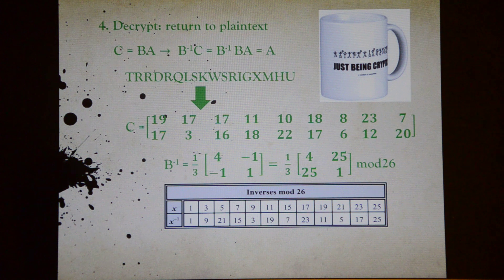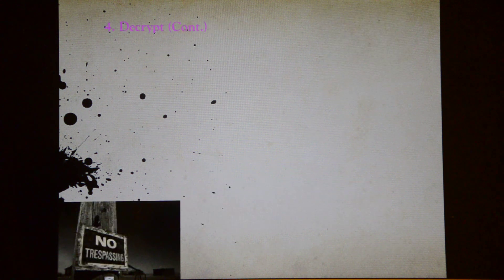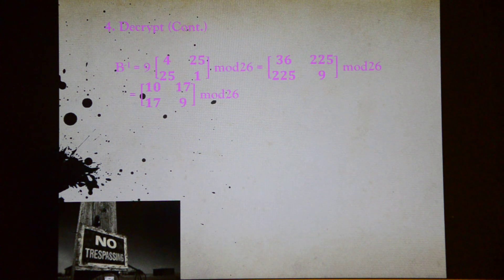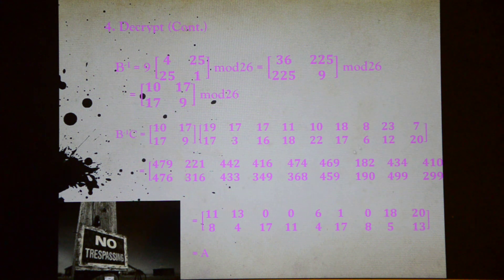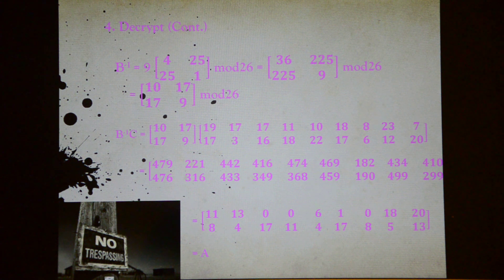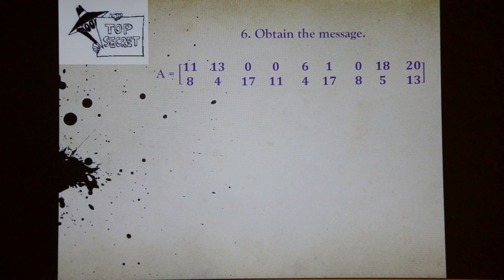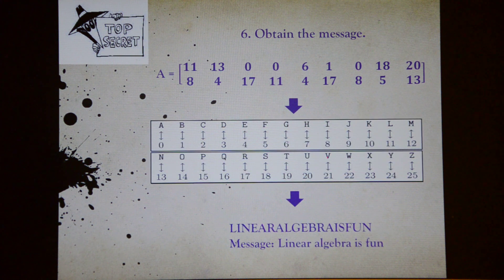Thus, we can write our matrix B inverse in this new form. Now we just need to convert B inverse into mod 26 as well. Then we can multiply C by B inverse and change it back into mod 26. As we can see, the matrix we've got here is the same matrix as A. After we have our matrix A, the last thing to do is to transform from numbers into letters and read the original message, which is 'linear algebra is fun' — and it is very true.